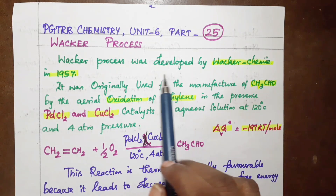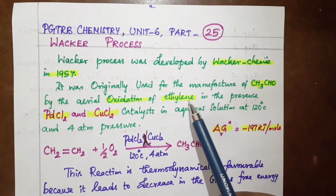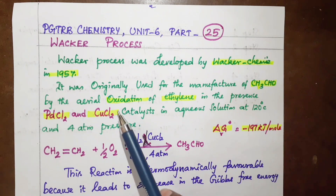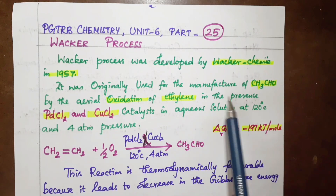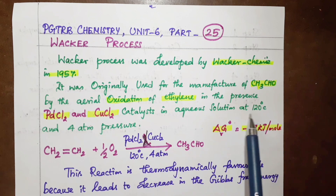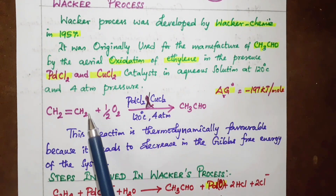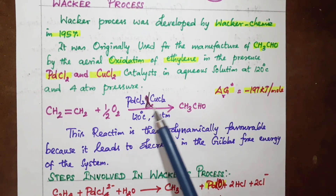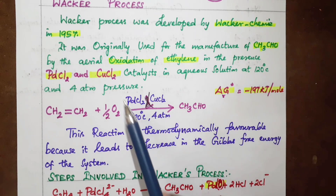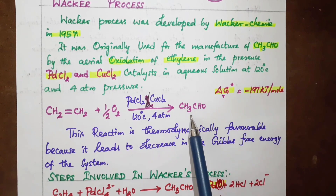The Wacker Process was named after Wacker Chemie in 1957. It was originally used for the manufacture of acetaldehyde by the aerial oxidation of ethylene in the presence of palladium chloride and copper chloride catalyst in aqueous solution at 120 degrees Celsius and 4 atmospheric pressure.